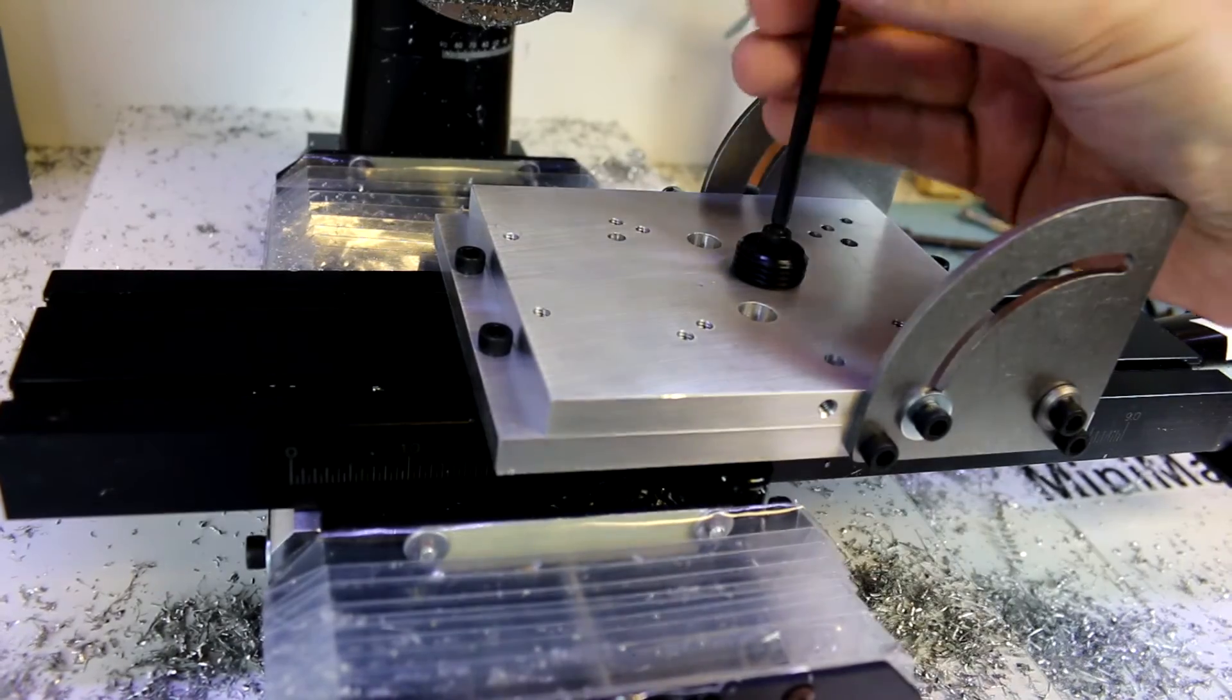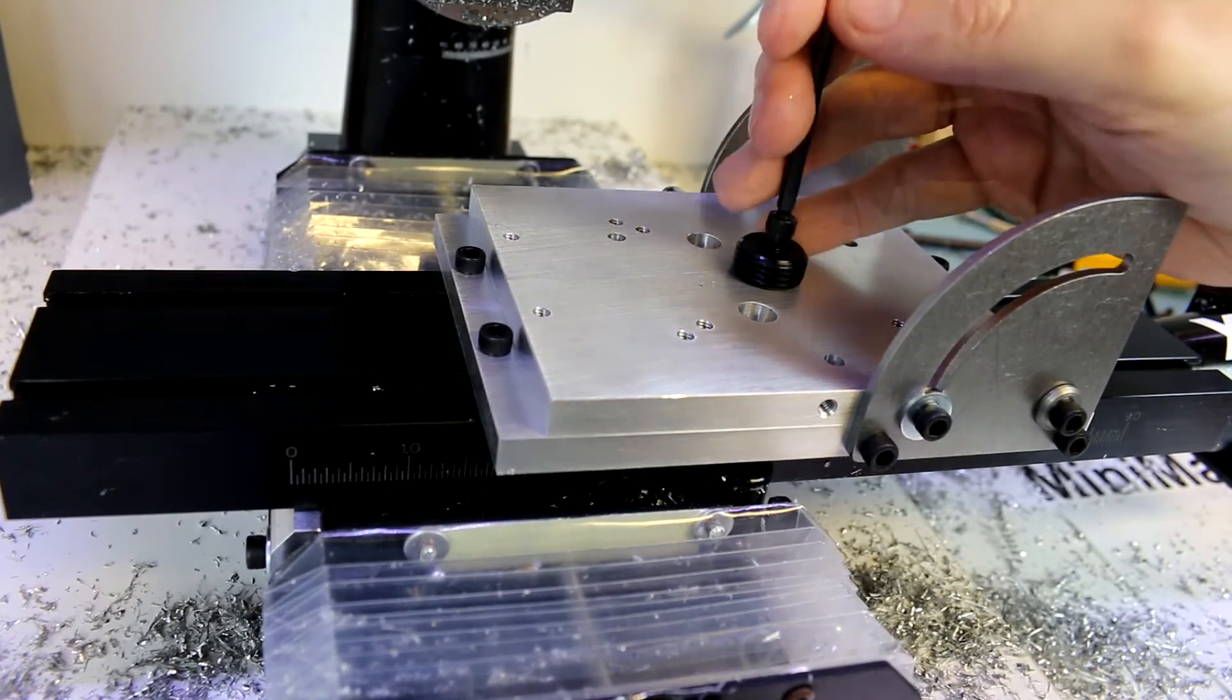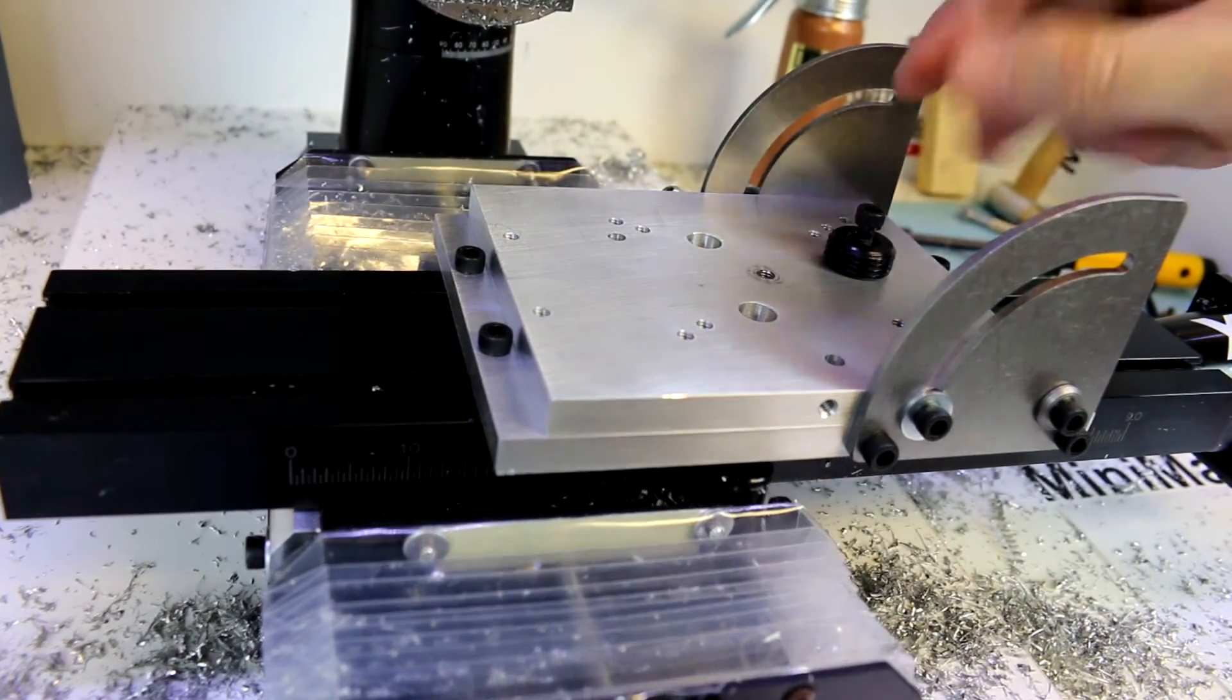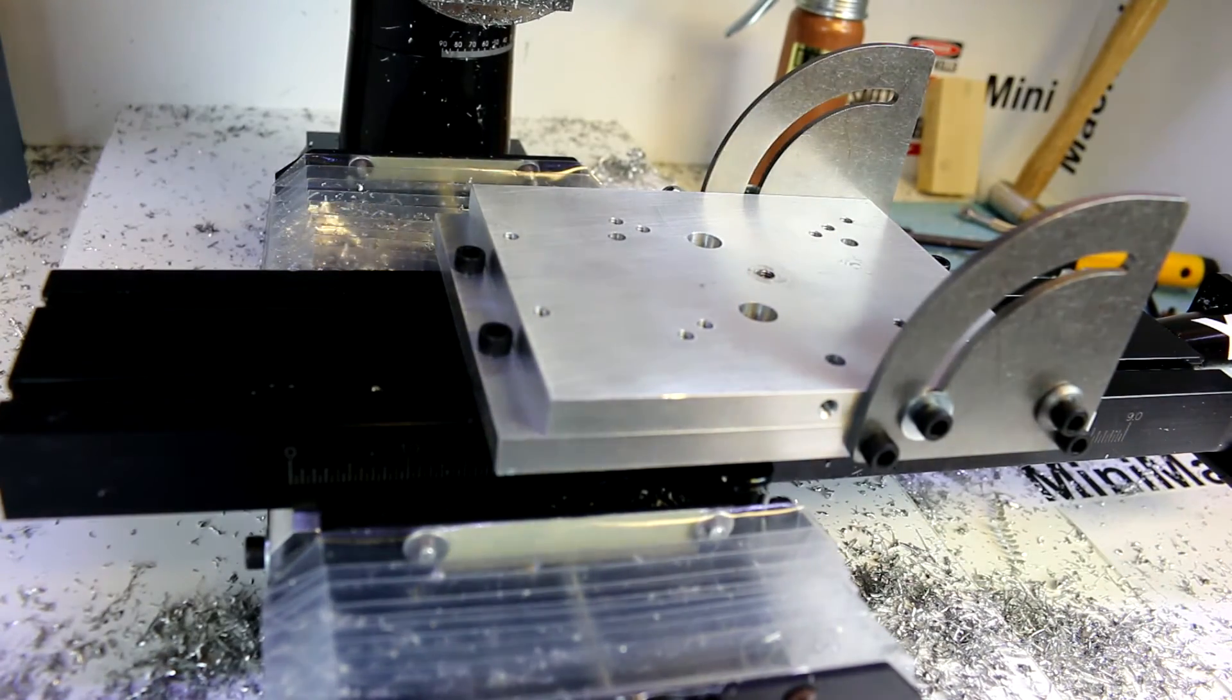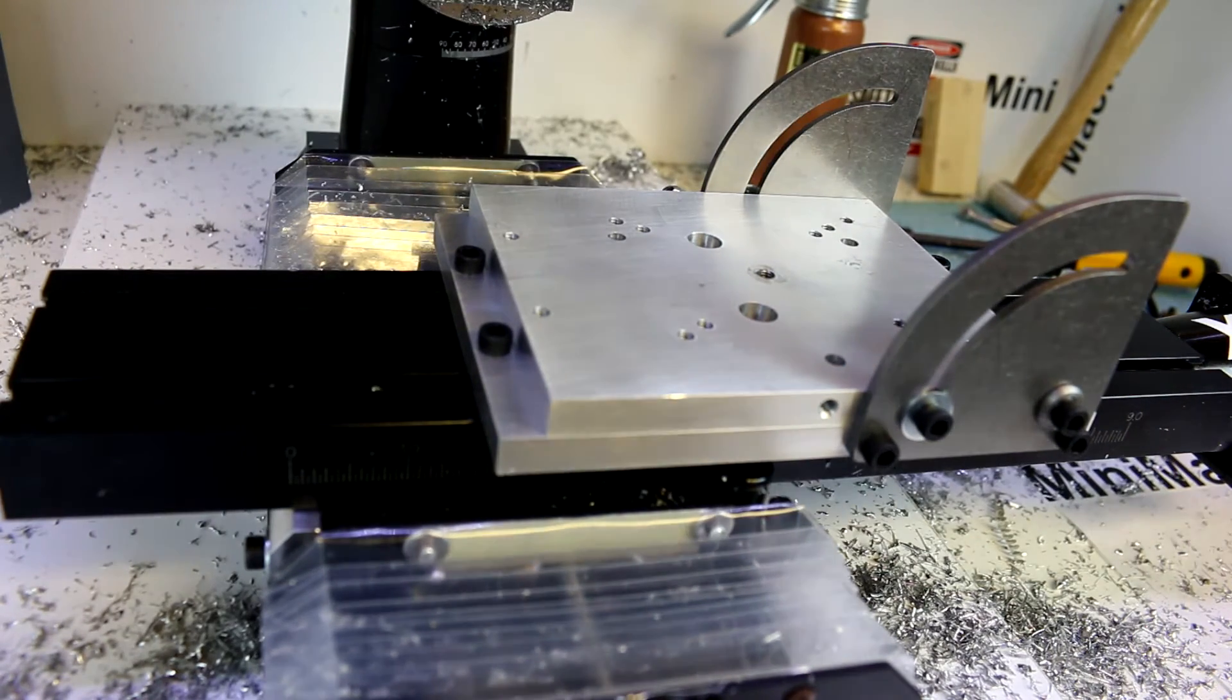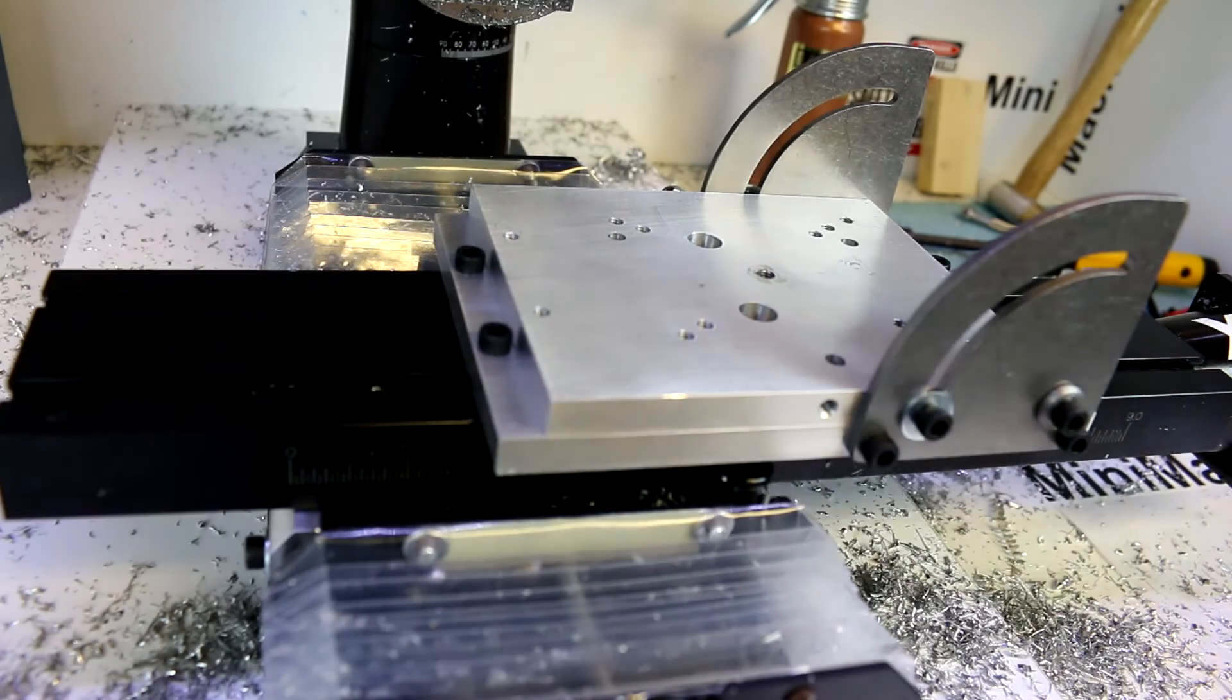Now this comes with a little chuck adapter in case you want to mount your three-jaw or four-jaw chuck. You can also mount the rotary table on here. What we're going to end up doing is mounting our vise.